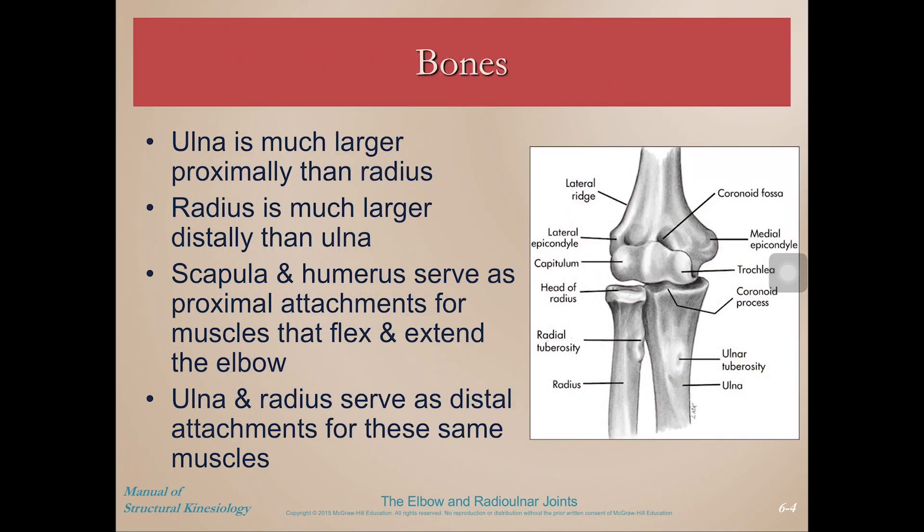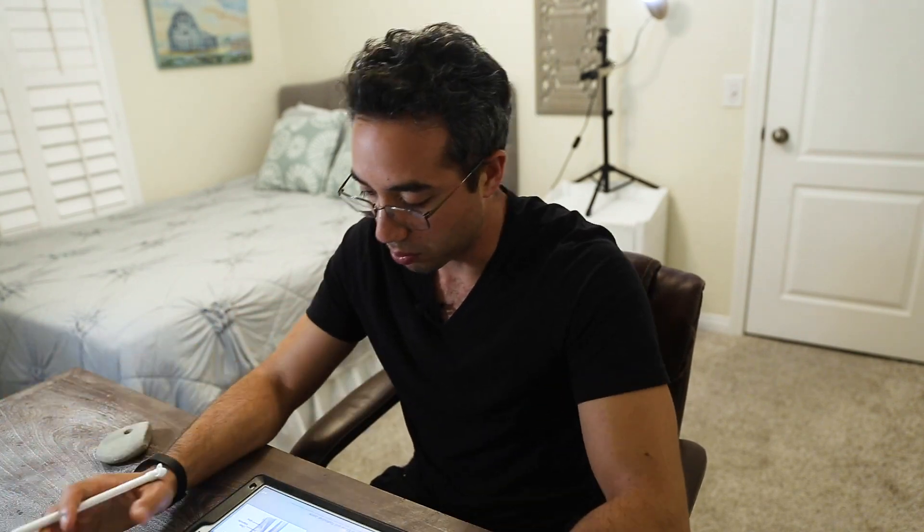To go over the bones: we have our humerus and then our ulna and radius in the forearm. The ulna is much larger than the radius. The ulna is on the pinky side — it starts larger proximally and gets smaller distally. The radius, on the other hand, is smaller proximally and larger distally. They have those shapes because when you pronate or supinate at the radial ulnar joint, it allows those bones to rotate over each other as you go back and forth between pronation and supination.